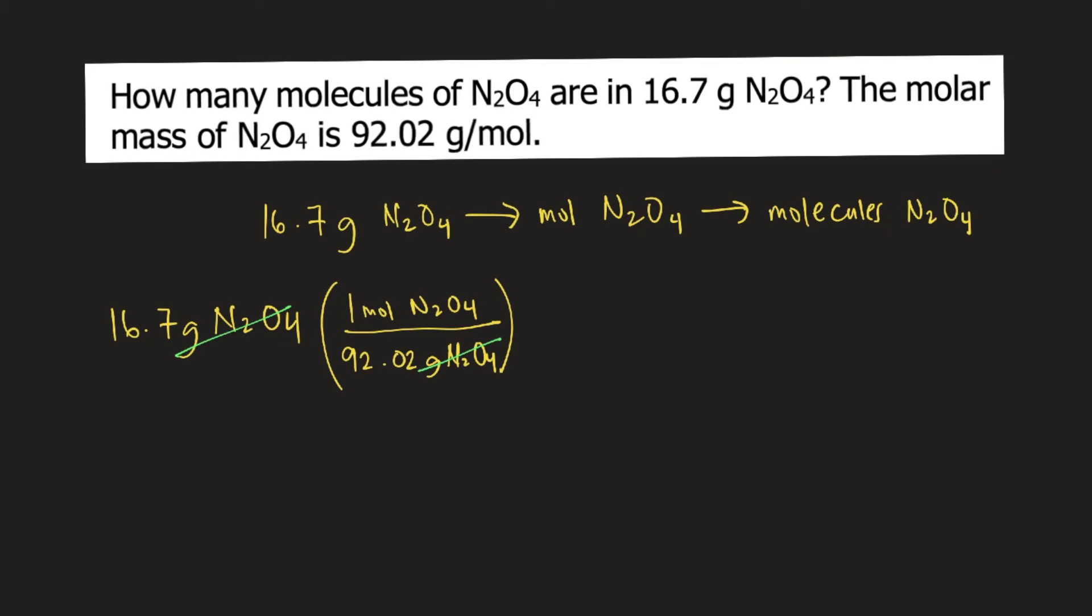And for the next step, moles to molecules. In order to convert moles to molecules, we need to use Avogadro's number. Our shortcut is NA. Avogadro's number is equal to 6.022 times 10 raised to 23 molecules per mole.